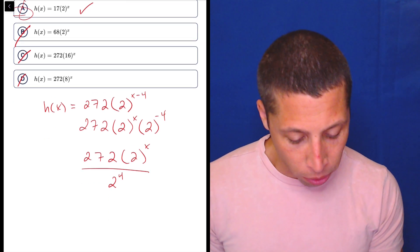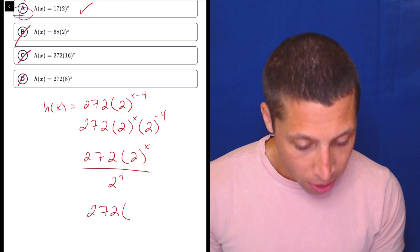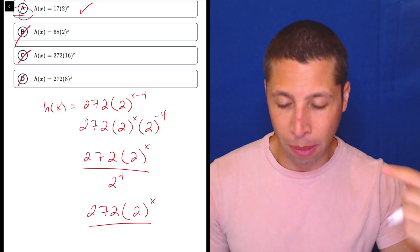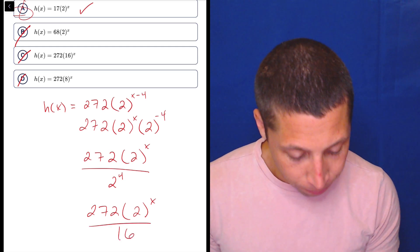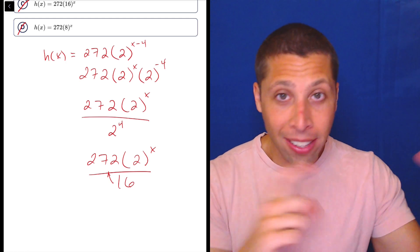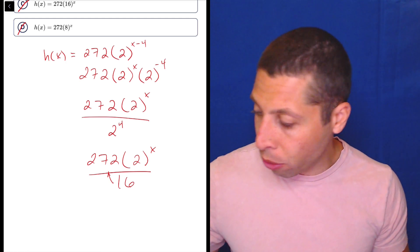Now, we can do 2 to the 4th. So, 272 times 2 to the x. 2 to the 4th. 2 times 2 is 4. Times 2 is 8. Times 2 is 16. So, now I can divide that 2 that's not raised to the x. That's its own little thing, right? So, that's 272 divided by 16.